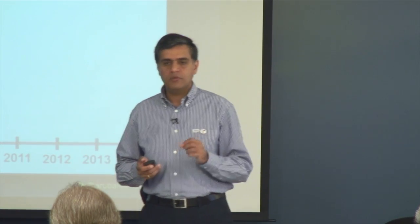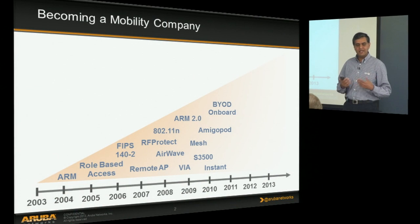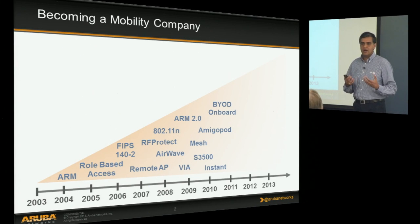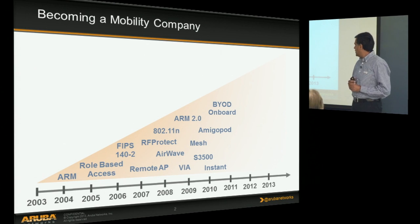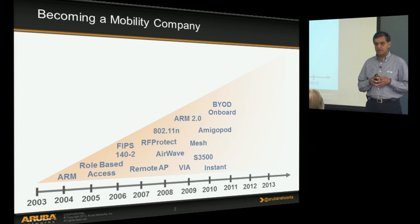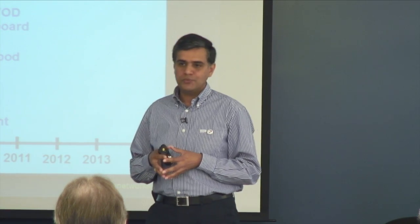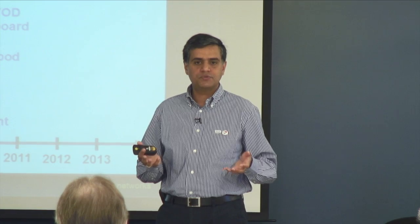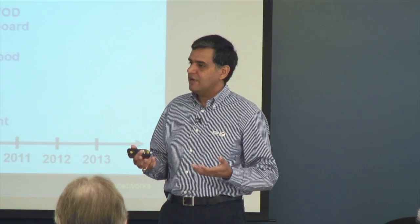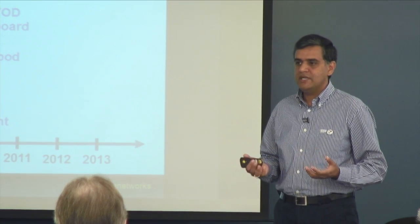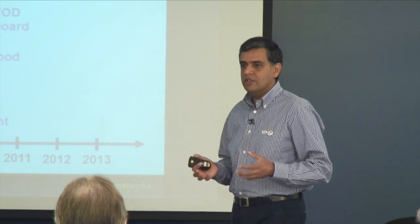The second phase was really when we hit our stride in terms of gaining market share and making a bigger impact, and that happened with the introduction of our 11n products. 11n finally put the performance issue of Wi-Fi to bed, where people said it's good enough to install Wi-Fi more widespread. 11n also introduced clients able to associate to 5 gigahertz, which was new — until then, 11g at 2.4 gigahertz was the norm. And along came mobile devices and BYOD, which has been all the rage the last few years.